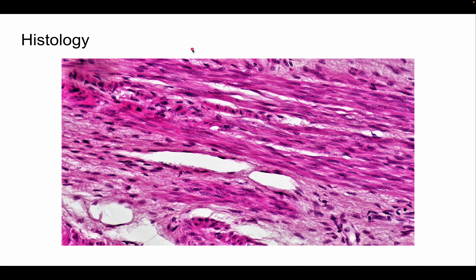Now let's look at histology. This tissue appears irregular, not parallel. Examining it, the cells are clustered with gaps, and some appear contracted. If you identify an individual cell, it's fusiform in shape. The only muscle tissue with fusiform cells is smooth muscle — so this is a smooth muscle slide. Each cell has only one nucleus.